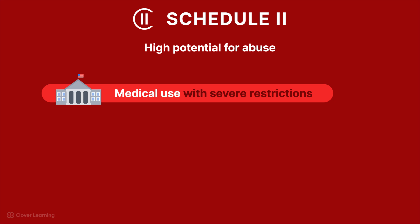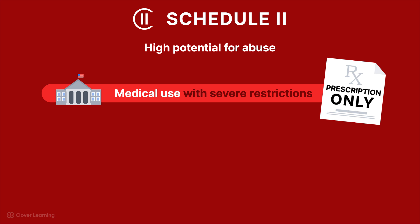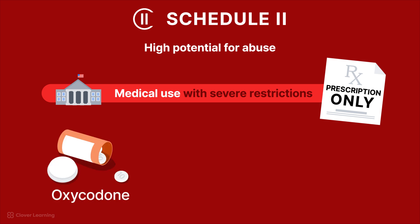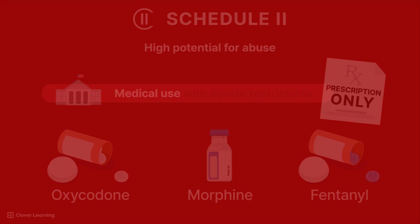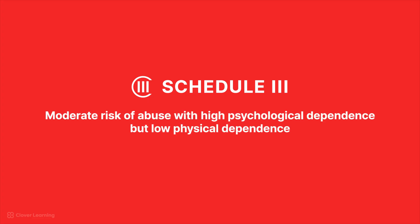Schedule II drugs also have a high abuse potential but have some accepted medical uses, such as pain management, with severe restrictions. These drugs are available by prescription only and cannot be refilled without a new written prescription. Common examples include oxycodone, morphine, and fentanyl.